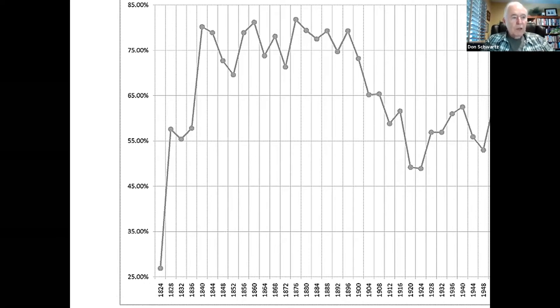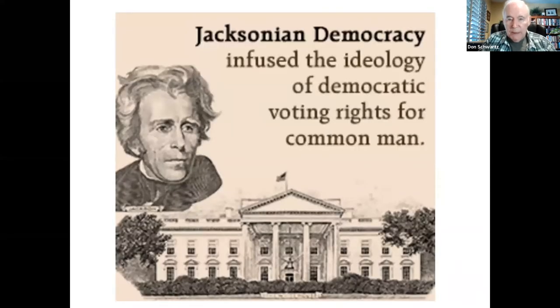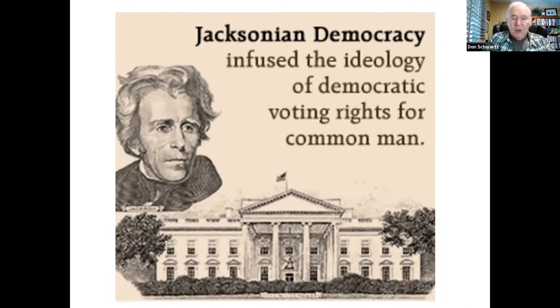This election was remarkable in a number of ways. In the 1824 election, just 27% of eligible voters voted, but in 1828, just four years later, 56% of eligible voters voted. That's because four of the 24 states eliminated property requirements for voting. Before 1828, you had to own a certain amount of property to be eligible to vote. Jackson believed that voting rights should be extended to all white men, and so his name became associated with Jacksonian democracy.